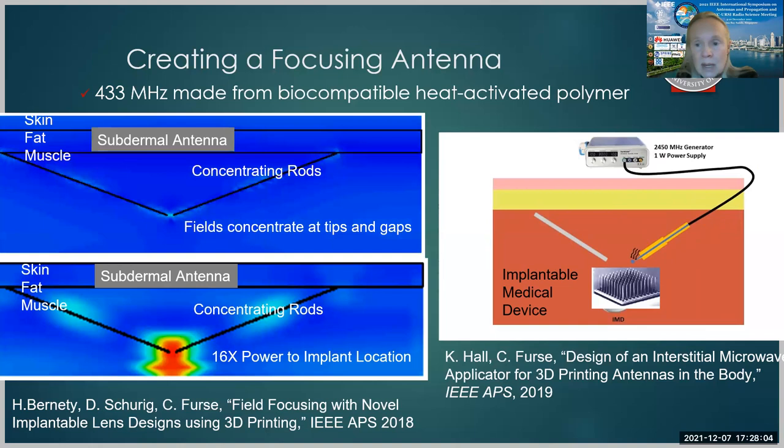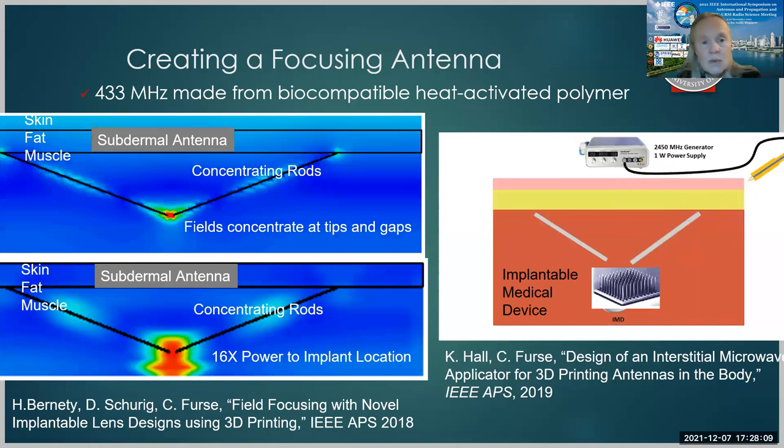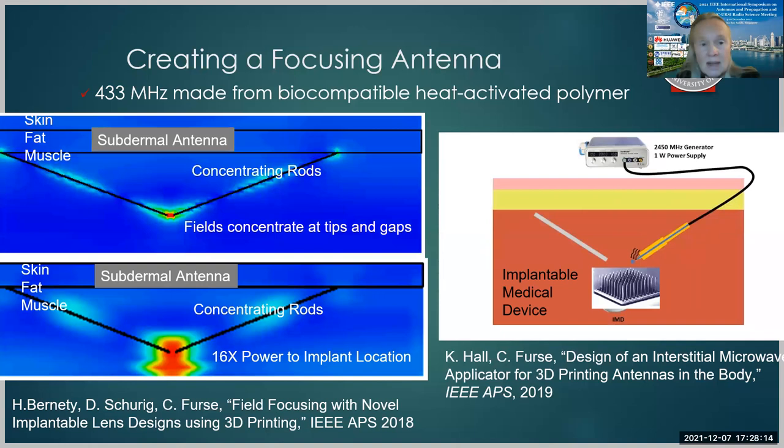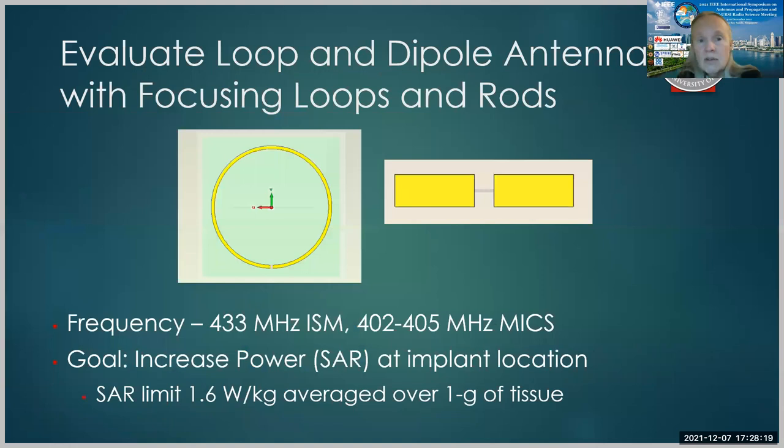Now the designs that we have done in the past, we've assumed that either we've evaluated what would happen if you had a plane wave outside the body. In this particular presentation, I'm going to talk about two different types of realistic antennas that would be used in the body. So one is a loop antenna, shown here, the other is a dipole. So instead of just considering how these focusing rods might work if we had a plane wave, let's see what would happen if we had a loop antenna outside the body and a very tiny loop on the implant, or a dipole outside the body and a very tiny dipole on the implant. And we're going to look at 433 megahertz because that's a frequency that we could test in our labs that is very close to the 402 to 405 megahertz MICS band.